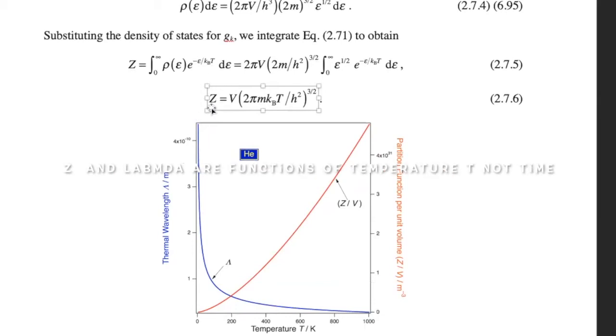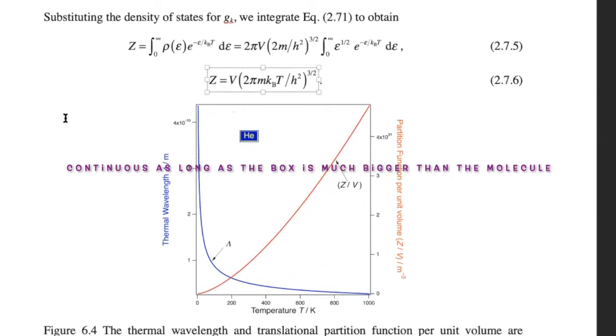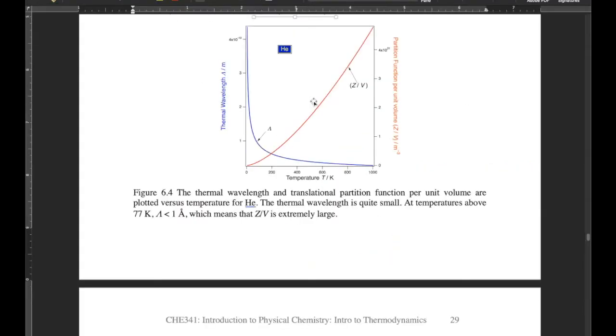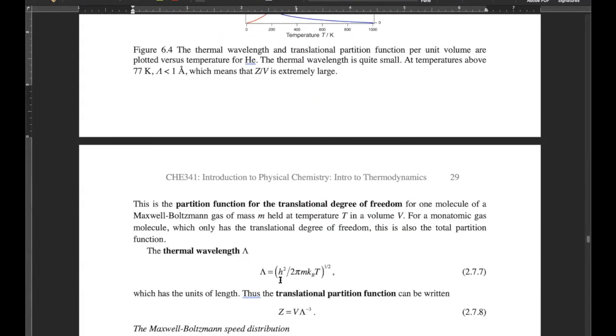Here's how these change as a function of time. The translational partition function is the only one we're going to find out that depends on the volume. It depends on the size of the container. We mentioned that for why it's a continuous distribution. And this term over here, this h-bar squared over 2 pi m k_B T to the one half, we call that the thermal wavelength.